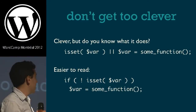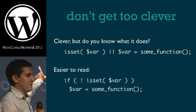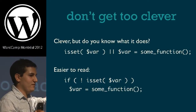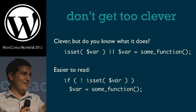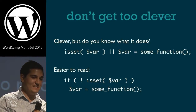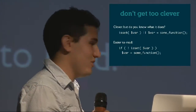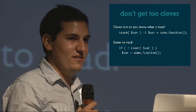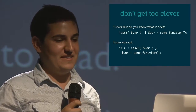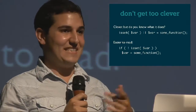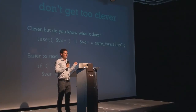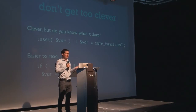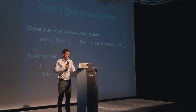Don't get too clever. How many of you understand what this statement does without reading the explanation below? Really not that many hands. Whereas the simpler version below — a lot more hands. They do the exact same thing, but the first one is really hard to decrypt and understand. So instead, don't be too clever — try to do things in a logical way that people will be able to read and understand.